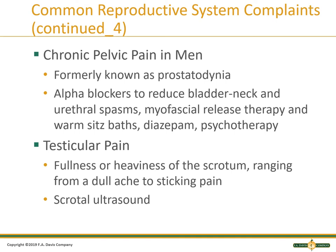For chronic pelvic pain in men, alpha blockers can reduce bladder neck and urethral spasms. Interventions include warm sitz baths, diazepam, and psychotherapy.